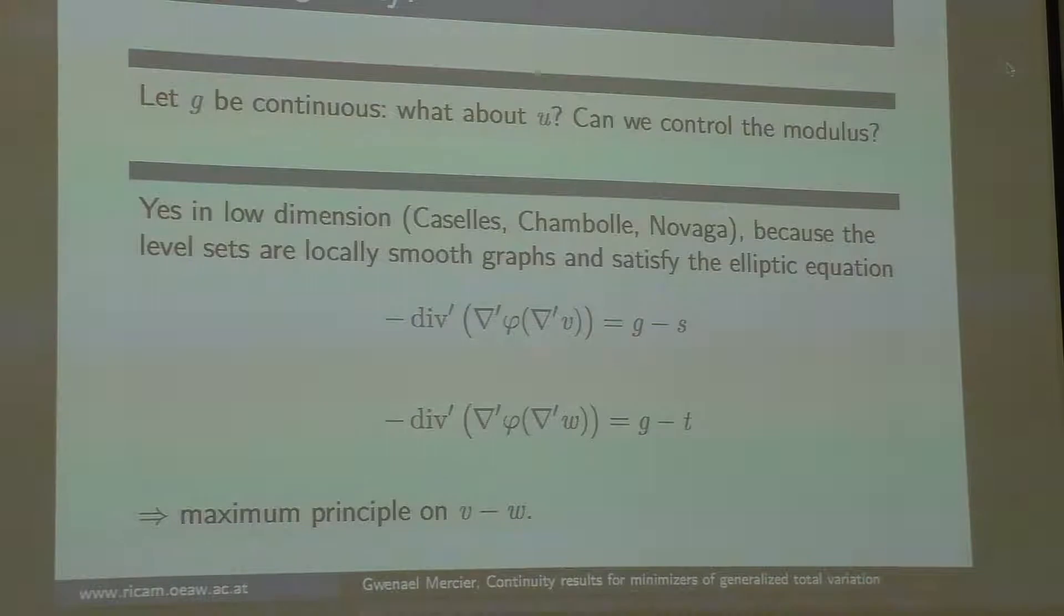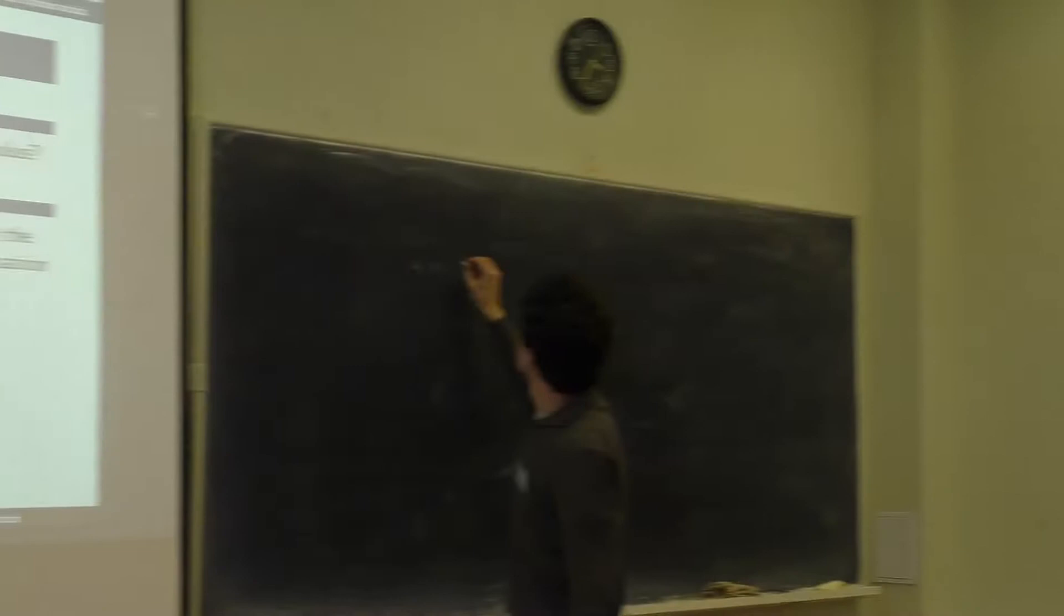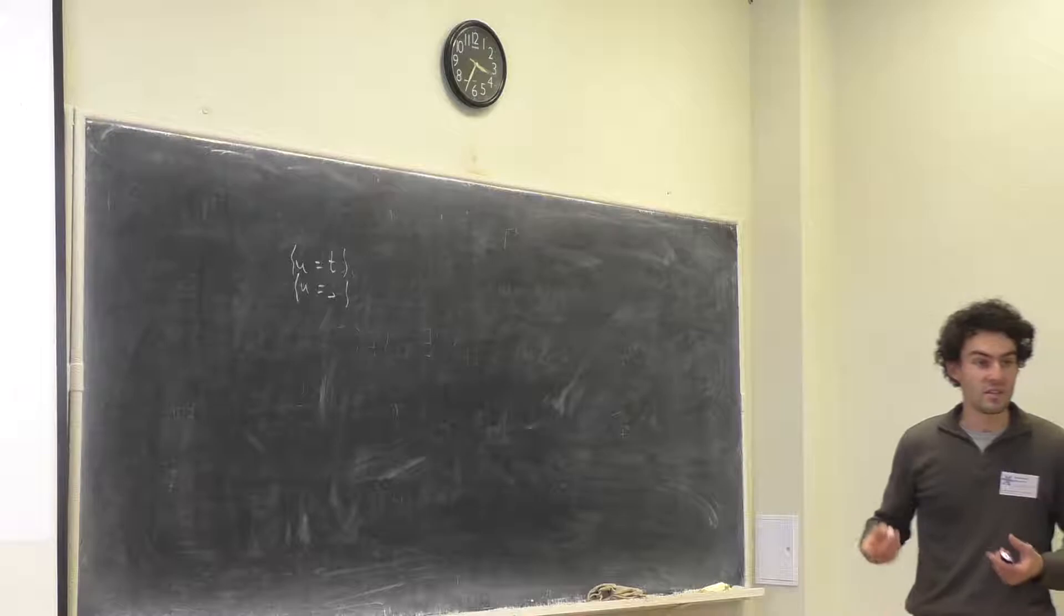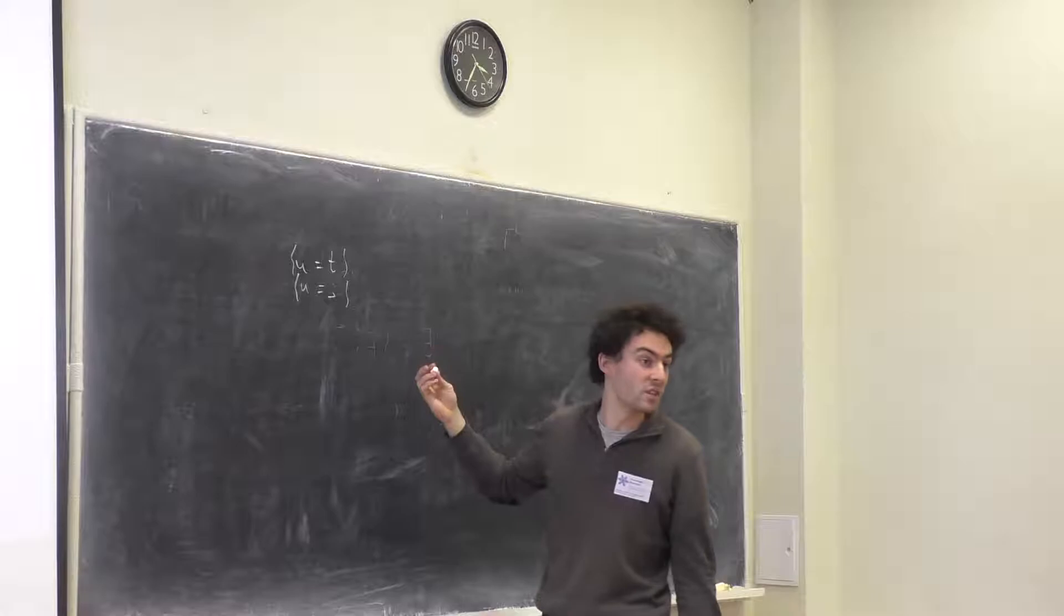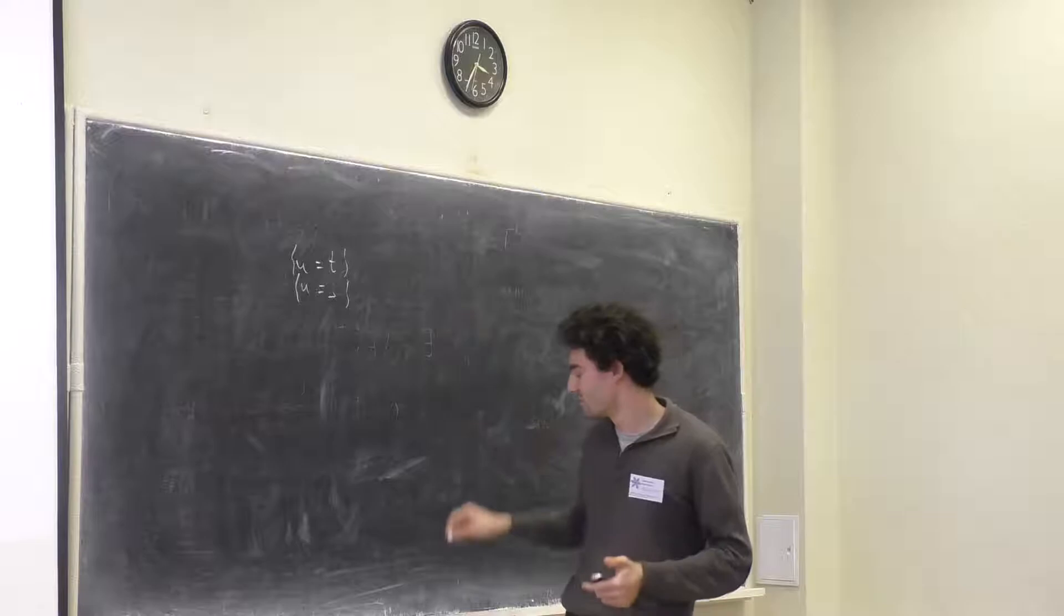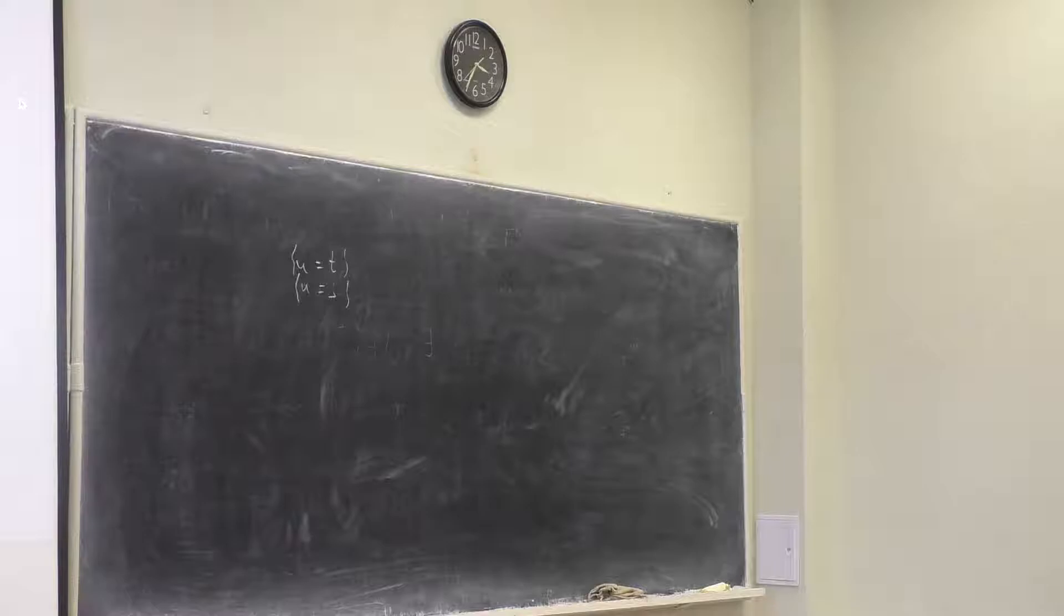The strong maximum principle for elliptic equations is well known, so you know that you write the difference, and the difference cannot have a maximum or minimum inside the set. It's like harmonic functions. This is a way to prove that in low dimension, you take two different level sets, they satisfy this maximum principle, they cannot touch. If you think a bit, two level sets, two different level sets—let's write it a bit simpler like this—u equals s and u equals t. If t is different than s and they don't touch, it means basically that u is continuous.